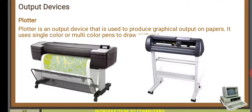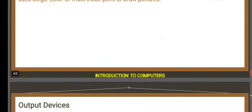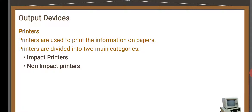The next output device is the plotter. A plotter is an output device used to produce graphical output on paper. It uses single-color or multi-color pens to draw pictures. This is also one of the output devices.